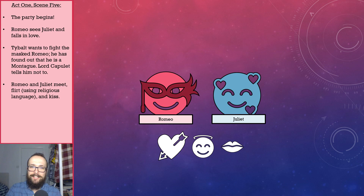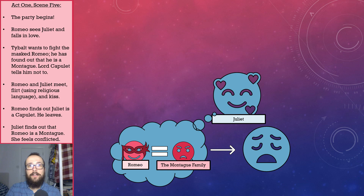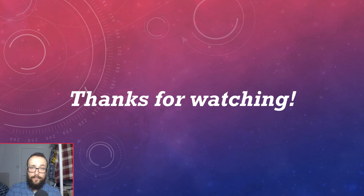How romantic. Whilst with Juliet, Romeo finds out that she is a Capulet, and he promptly leaves the party. Afterwards, Juliet finds out that Romeo is a Montague. Her love for Romeo is already so intense that this leaves her feeling very conflicted indeed. After all, their families are sworn enemies.